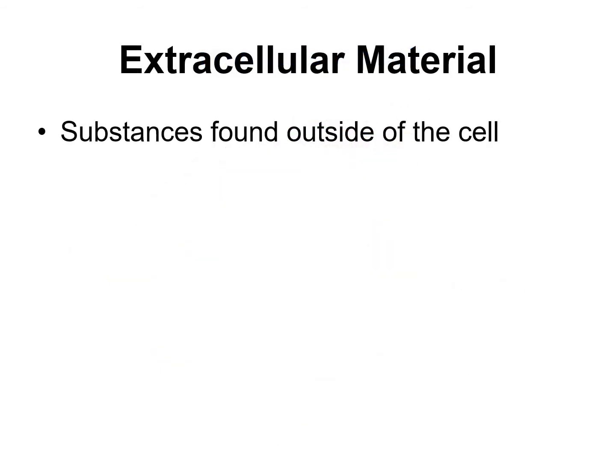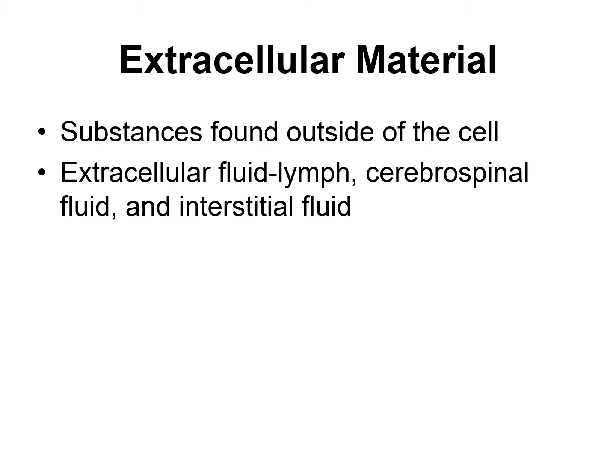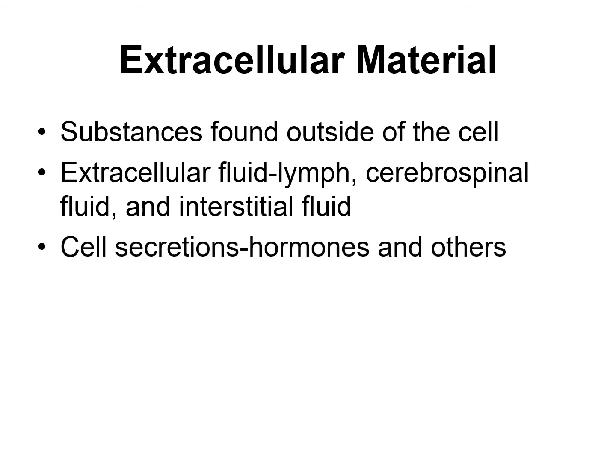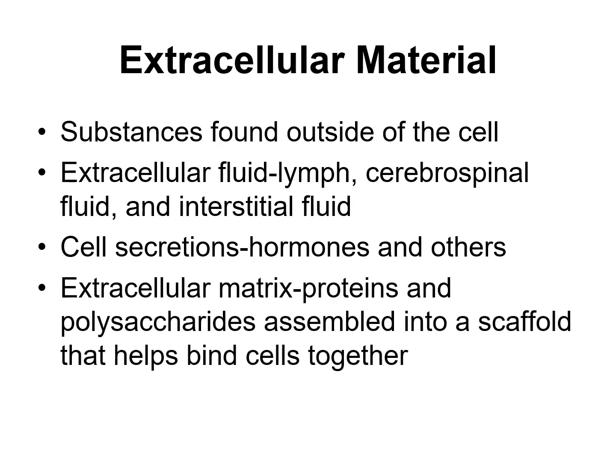Before moving on to discuss the cell proper, I want to mention extracellular material. Extracellular materials are all substances found outside the cell, including extracellular fluid such as lymph, cerebral spinal fluid, and interstitial fluid. You also have secretions of cells such as hormones and other substances that the cell secretes. And lastly, you have the extracellular matrix.